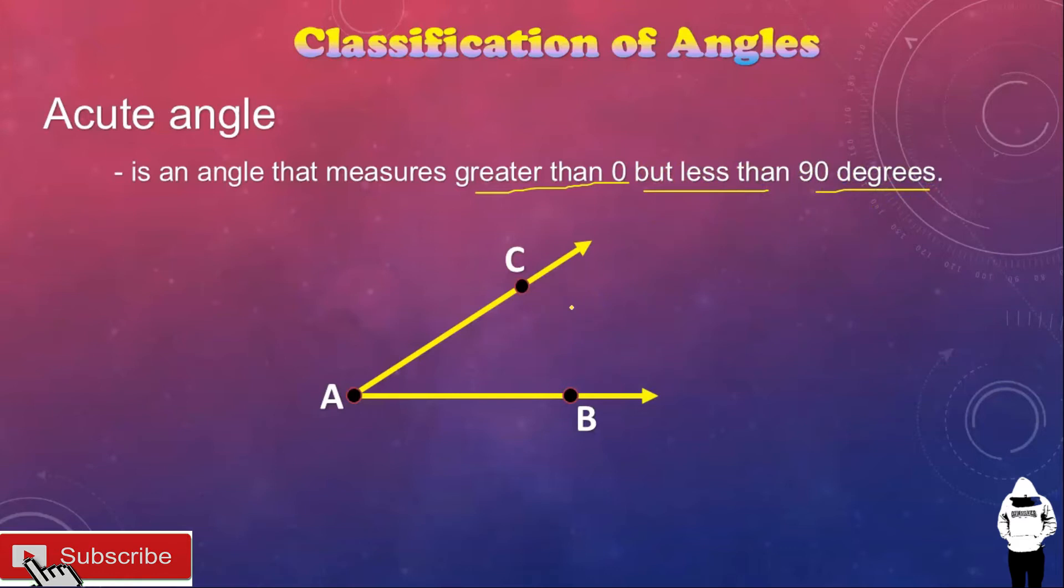Look at the angle. Angle CAB or angle A measures 50 degrees. This is an acute angle. Yung 50 kasi ay nasa gitna ng zero to 90 degrees. Kaya tinawag po ito na acute angle.